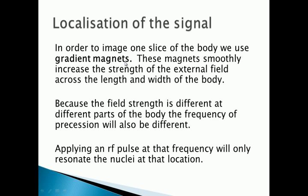The gradient magnets smoothly increase the strength of the field B0 from the feet towards the head, for example. The reason for doing this is that angular frequency and precession frequency both depend on the strength of the magnetic field, so we can change the frequency that the protons are precessing at for different parts of the body. The protons in the feet will be precessing at a slightly different frequency to those towards the chest. By targeting a particular slice using radio waves at a specific frequency — the frequency that just that slice is precessing at — we can make only those protons resonate and give us a signal.